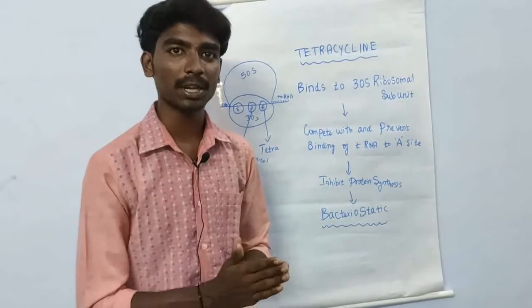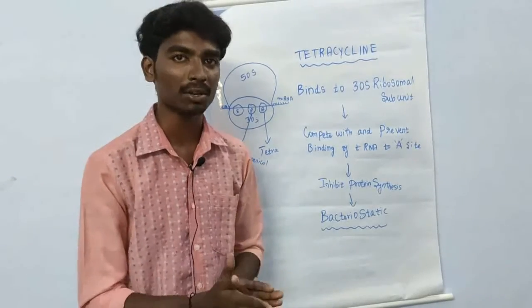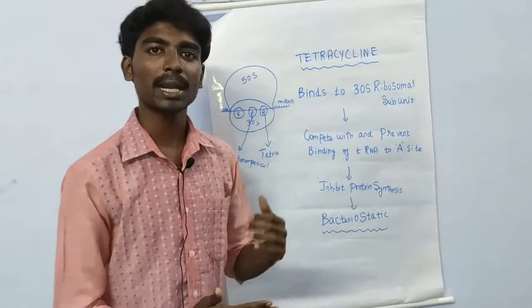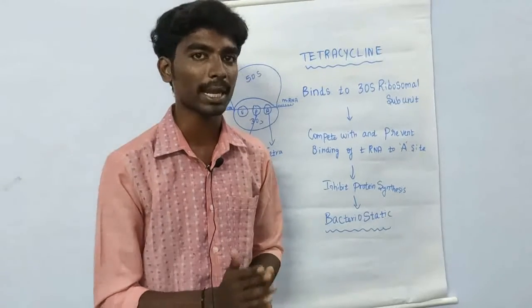Penicillin and tetracycline are different. It is bacteriostatic. Tetracycline is bacteriostatic. Tetracycline binds 30S ribosome. Penicillin is cell wall synthesis. This is the two-way difference. Next is chloramphenicol mechanism.